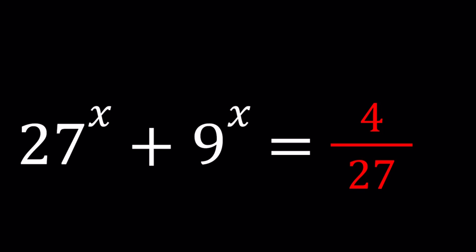Hello everyone. In this video, we're going to be solving a nice exponential equation. We have 27 to the power x plus 9 to the power x equals 4 over 27, and we're going to be solving for x values. I'll probably be presenting more than one method. Let's get started and see what happens.